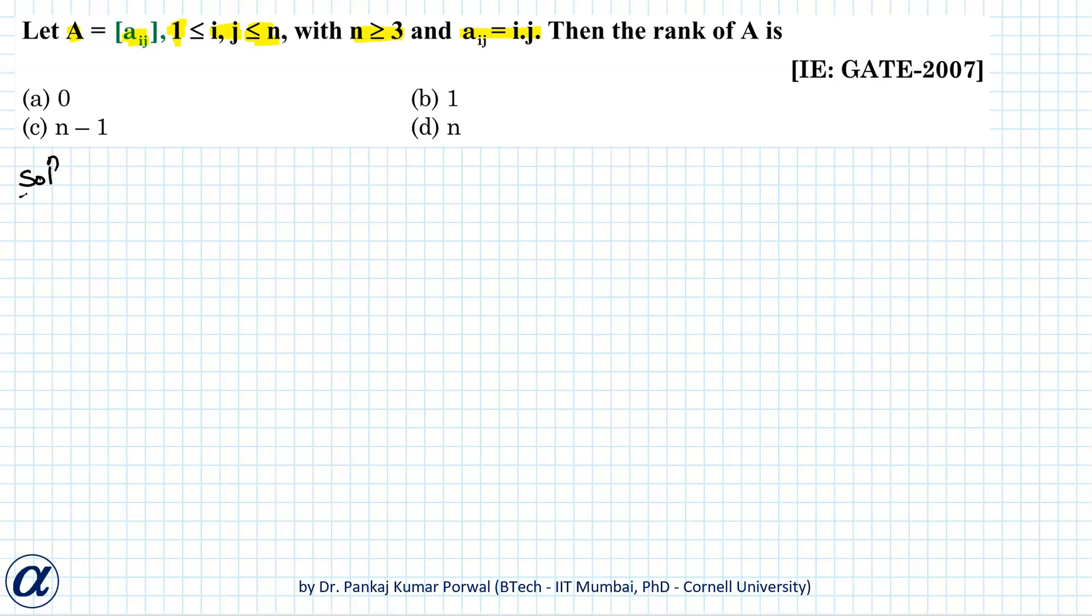Let's solve this case when n equals 3. Our matrix A will become, and here note that i is the row of the matrix and j is the column of the matrix. So i times j will basically be multiplication of the row number and the column number of the corresponding elements.